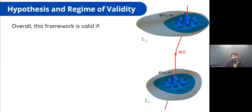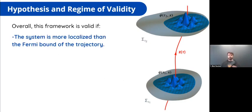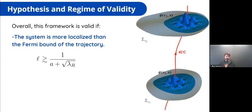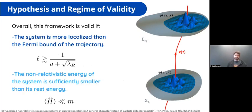Putting these together, the corrections due to the acceleration of the trajectory and curvature of spacetime are all associated with this relativistic Hamiltonian, giving us a formulation for describing localized non-relativistic quantum systems. The two important conditions are: one, the system has to be more localized than the Fermi bound, which we can estimate; and two, the non-relativistic energy must be sufficiently smaller than the rest energy so we can approximate the Hamiltonian. This matches previous descriptions found in the literature.